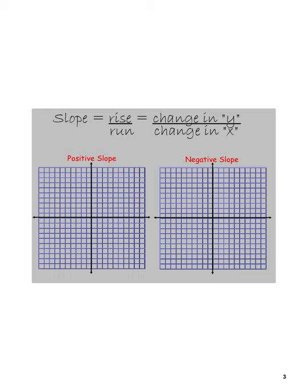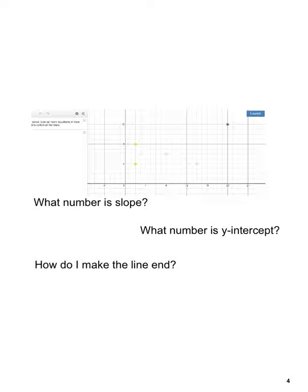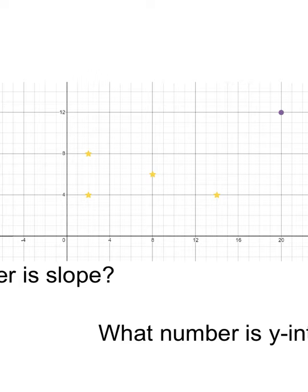A positive slope means as we go left to right, the rise is going up. A negative slope means the rise is going down — more of a fall than a rise. So if you write a negative slope but your picture looks like it's going uphill, that's a problem, and vice versa.